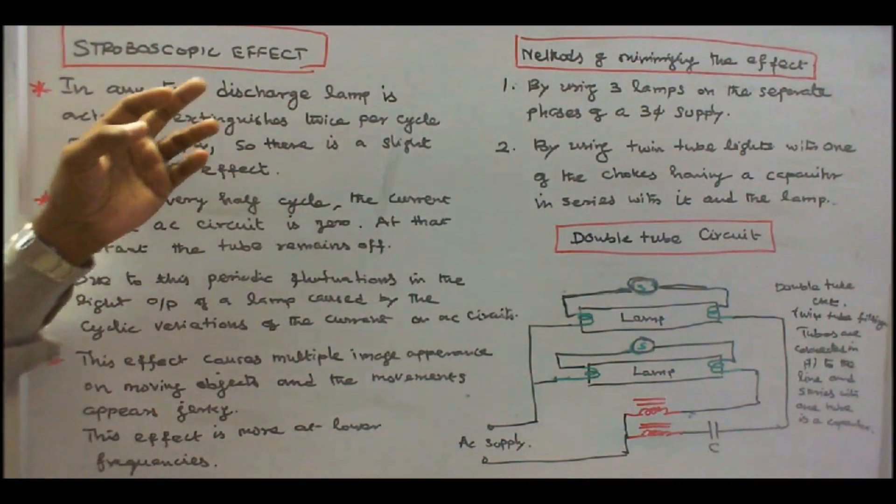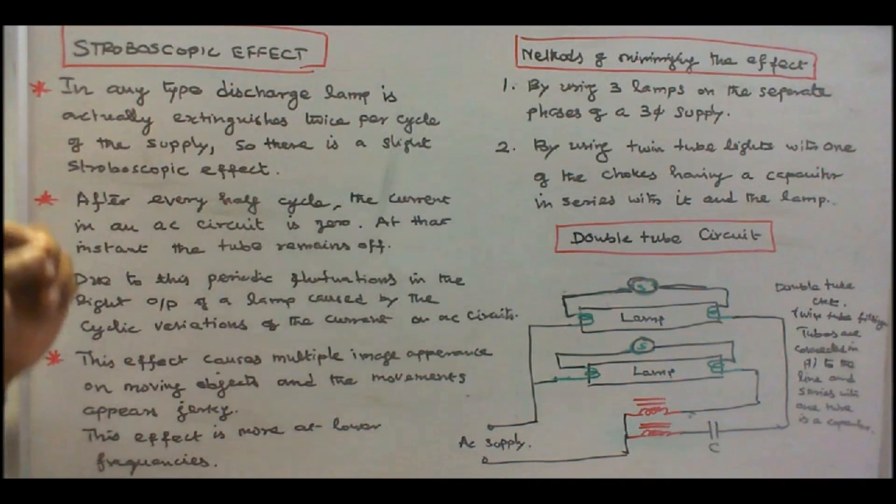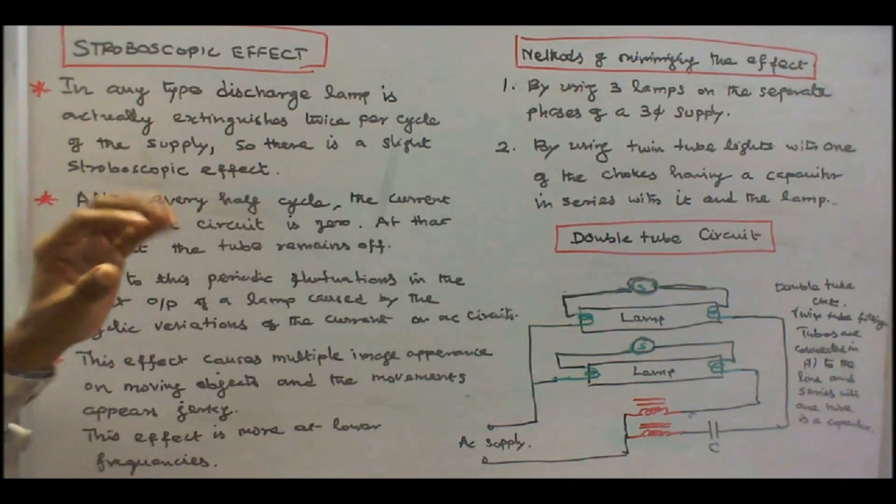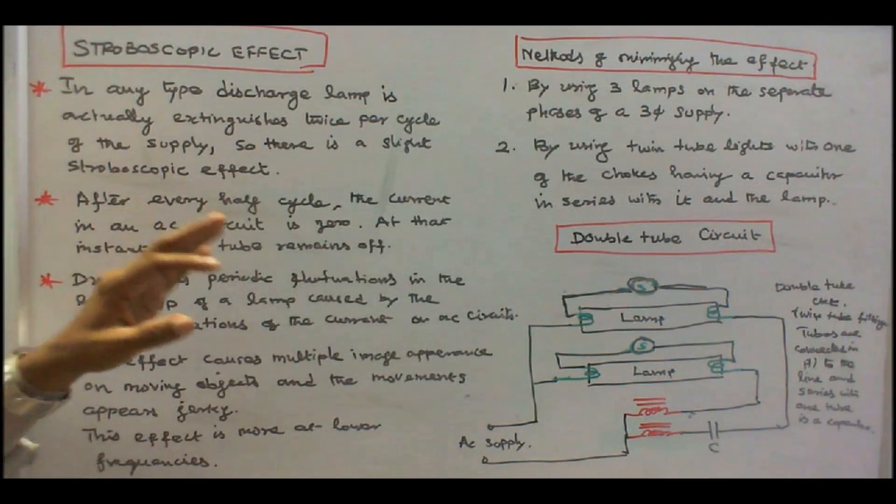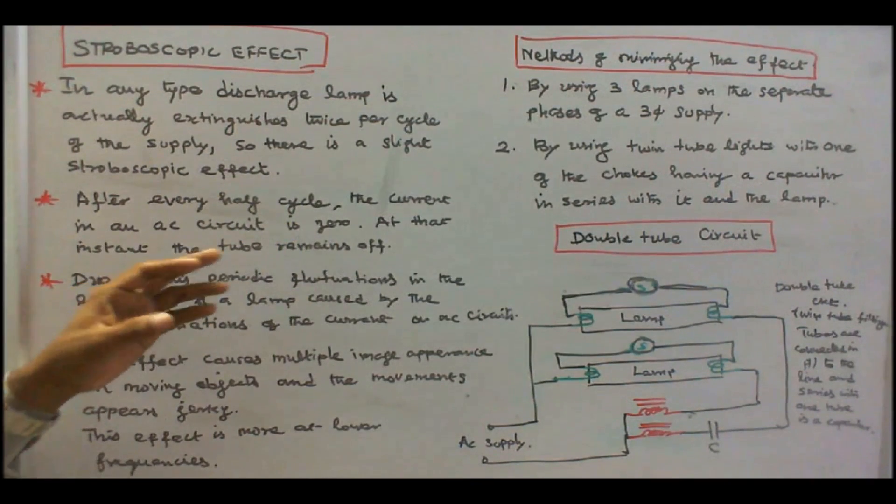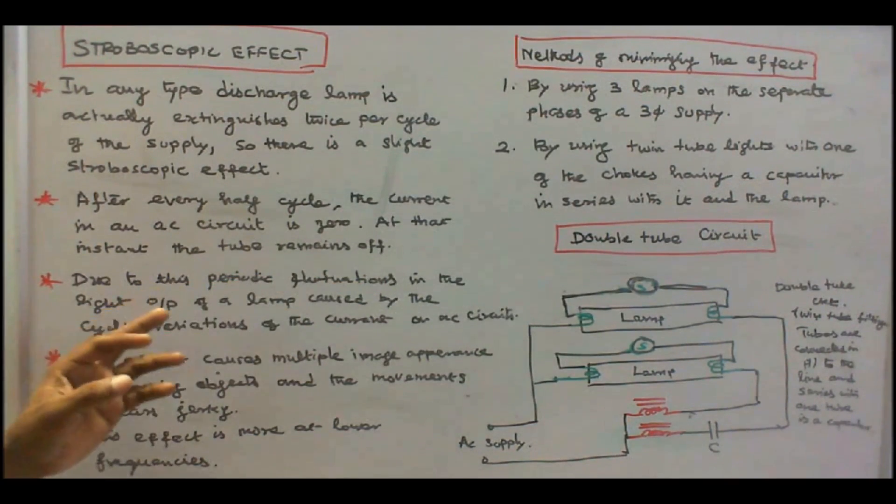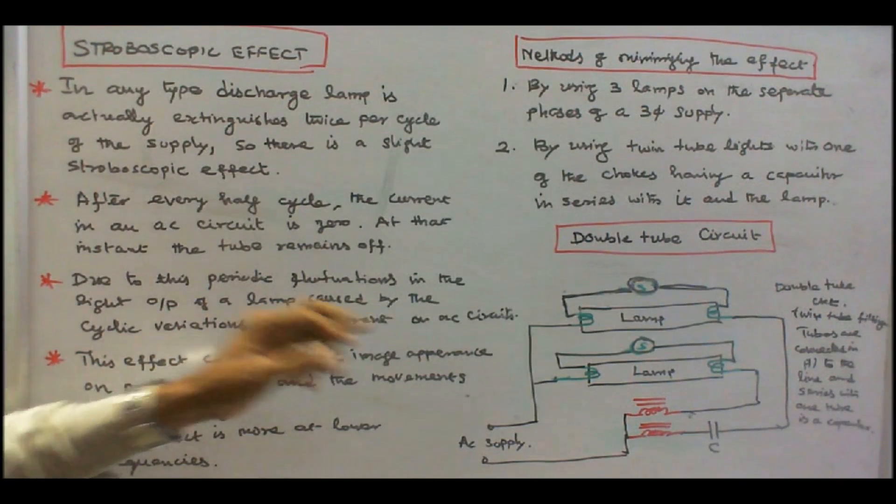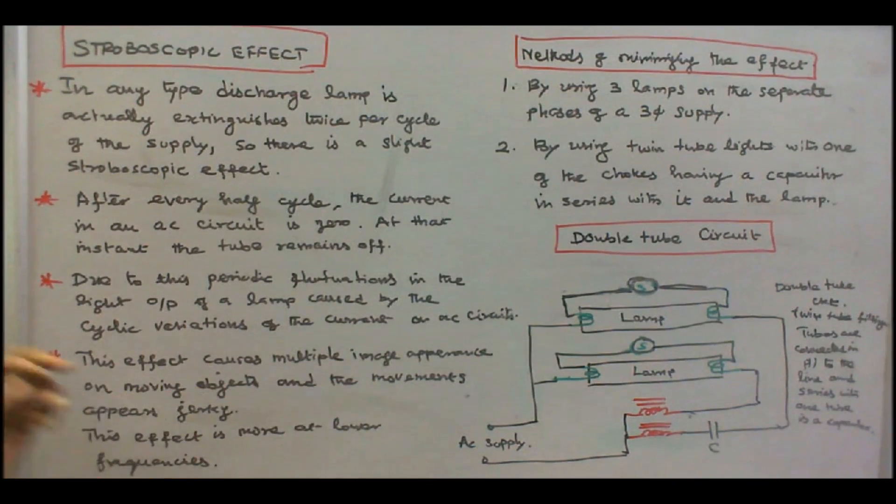Now we will see the stroboscopic effect in a tube light. In any type discharge lamp, it actually extinguishes twice per cycle of the supply. So there is a slight stroboscopic effect. After every half cycle, the current in an AC circuit is zero. At that instant, the tube remains off. Due to this periodic fluctuations in the light output of a lamp, caused by the cyclic variations of the current on AC circuits. This effect causes multiple image appearance on moving objects and the movements appear jerky. This effect is more at lower frequencies.